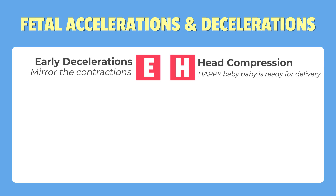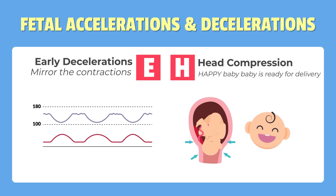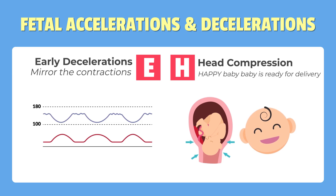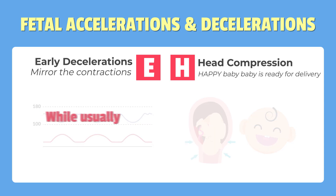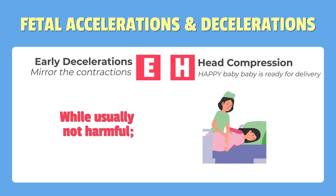E is for early decelerations, typically due to head compression. These occur when the heart rate slows progressively before contraction peaks. It's common in late labor as the baby descends through the birth canal. While it's usually not harmful, changing the mother's position can help alleviate pressure and improve oxygen flow.